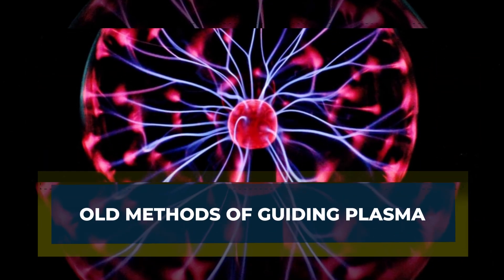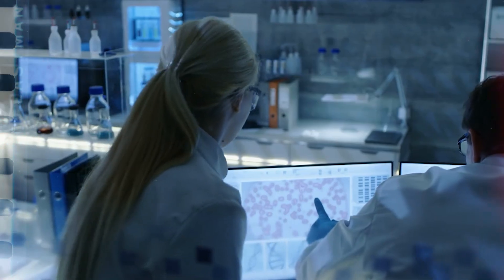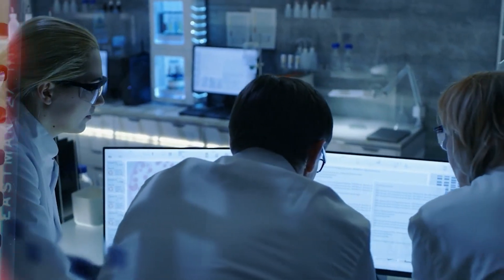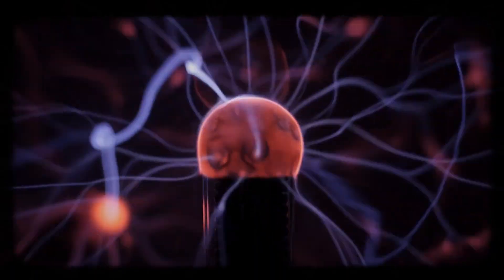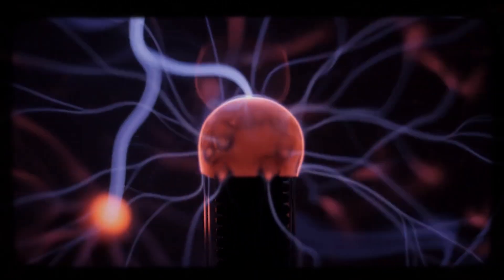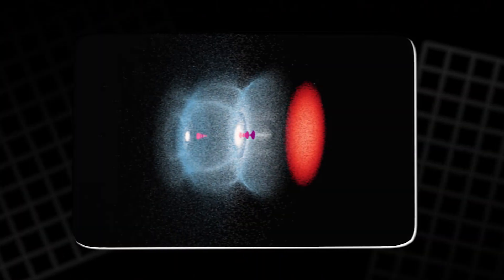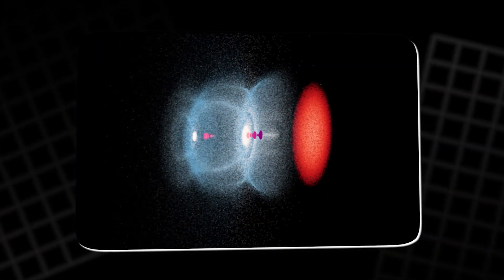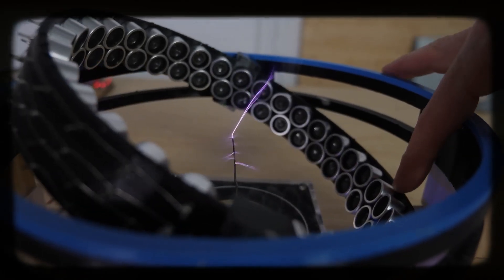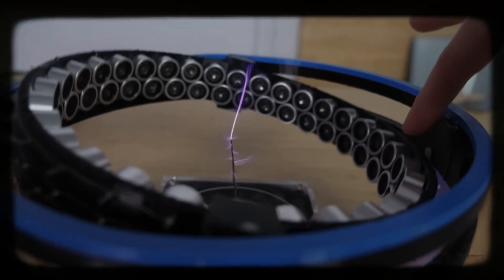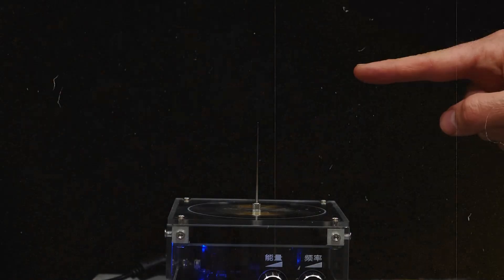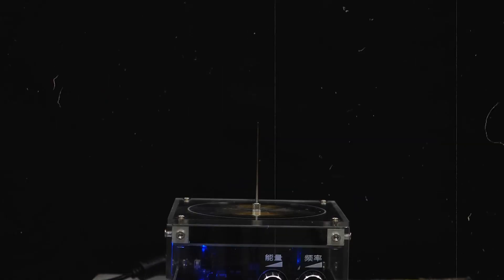Old methods of guiding plasma: In earlier experiments, researchers tried using powerful lasers to guide electric discharges. The laser would heat and ionize a path in the air, forming a temporary channel that a spark could follow. It worked, but it came with problems. The laser itself could do more damage than the plasma. It required large amounts of energy and could burn or damage surrounding materials. So, despite its success, the laser approach was not practical for most applications.